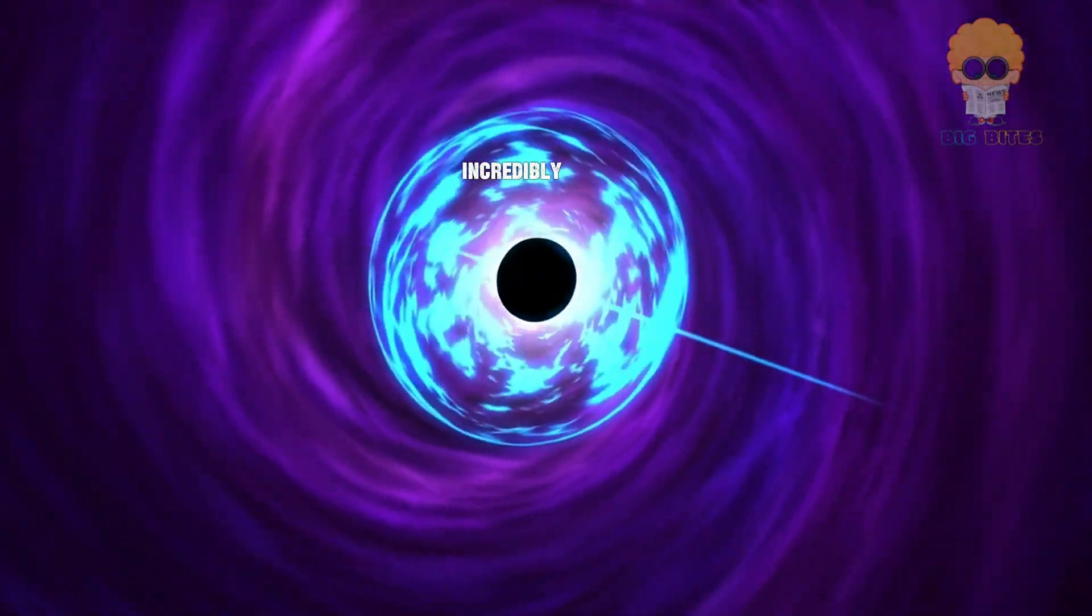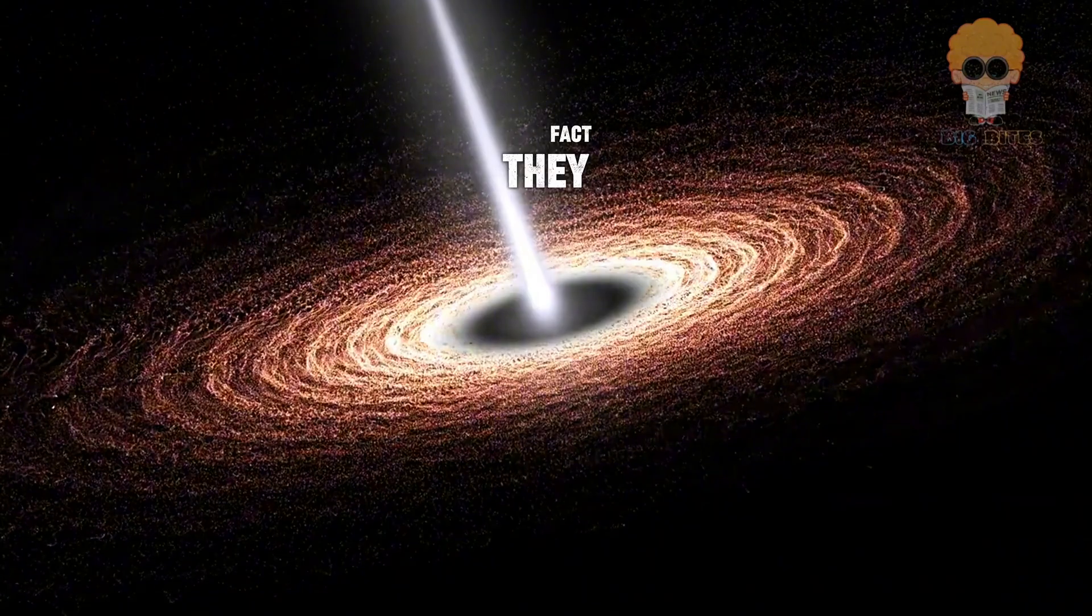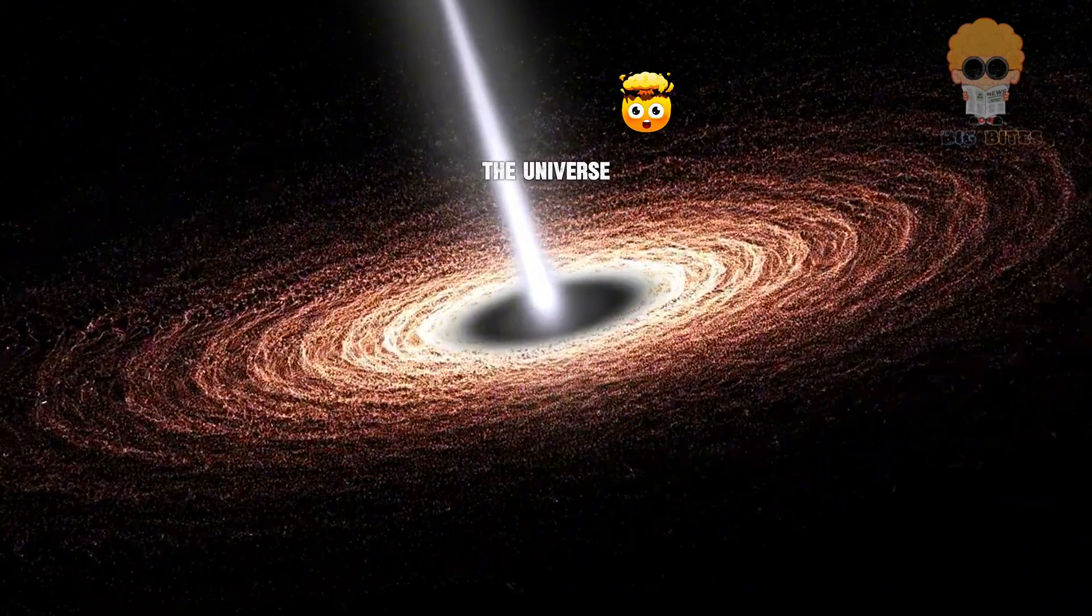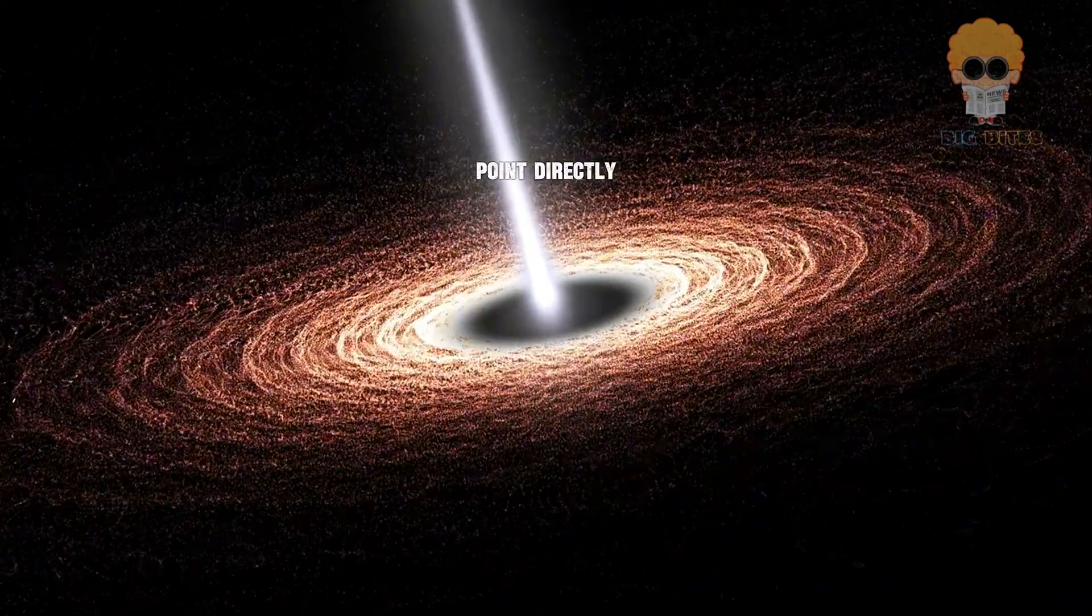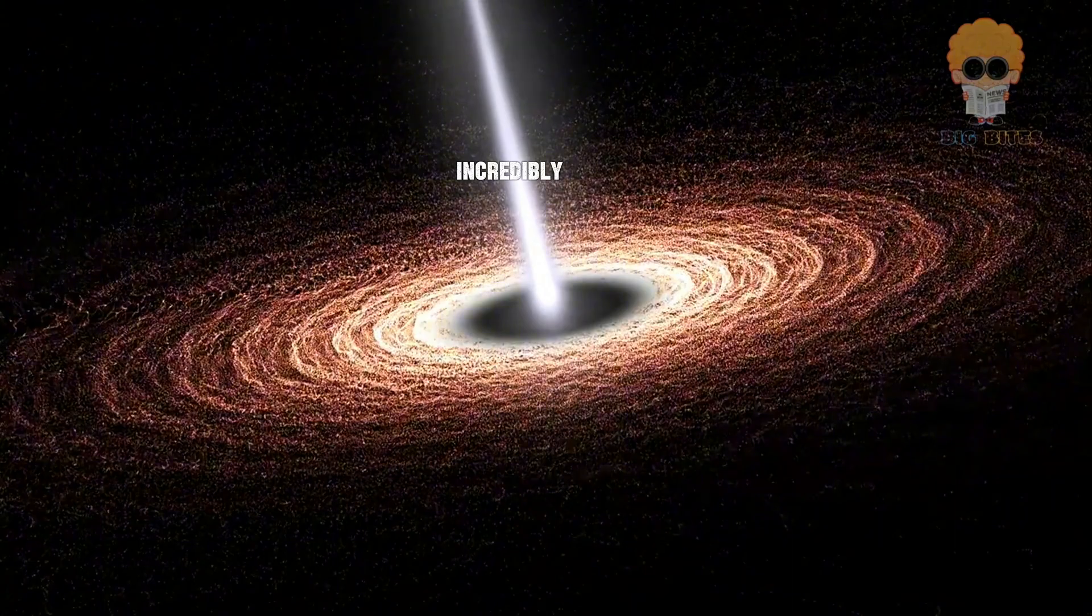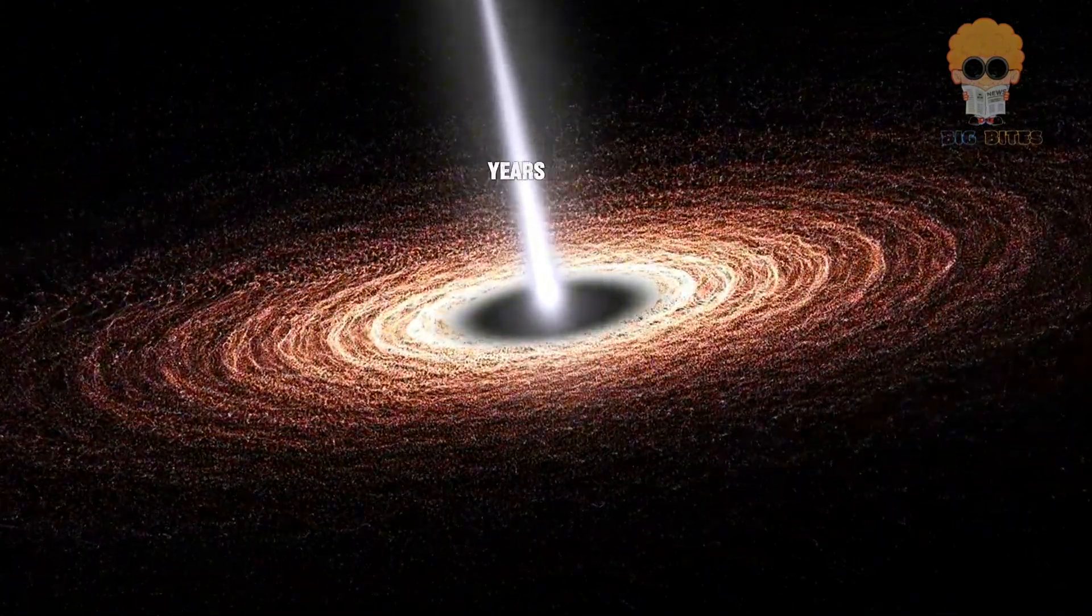This jet is what makes blazars so incredibly bright. In fact, they are some of the brightest objects in the universe. Because these jets point directly at Earth, they appear incredibly bright and can be seen from billions of light-years away.